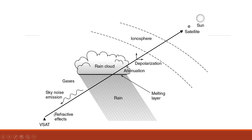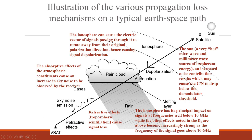The diagram illustrates various propagation loss mechanisms on a typical earth-space path. The ionosphere can cause the electric vector of signals passing through it to rotate away from their original polarization direction, causing signal depolarization. The ionosphere contains charged particles, so when the electromagnetic field vector passes through it, the polarization of the electric and magnetic field vectors rotates and the signal becomes depolarized.